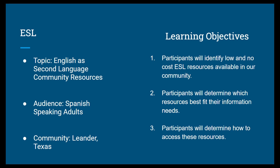The second objective states participants will determine which resources best fit their information needs, and participants will determine how to access these resources. The learning outcomes align to the Searching as Strategic Exploration frame of the ACRL framework, because one of its knowledge practices states learners who are developing their information literate abilities identify interested parties — such as scholars, organizations, governments, and industries — who might produce information about a topic and then determine how to access that information.